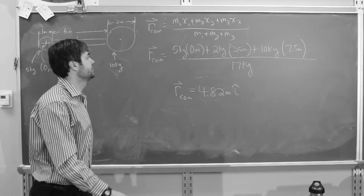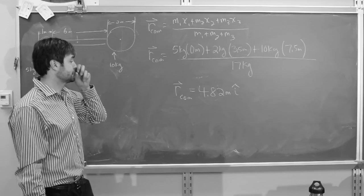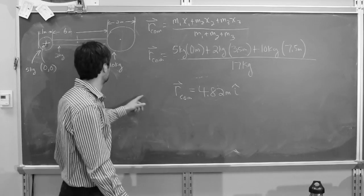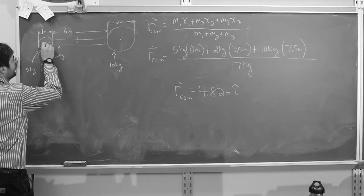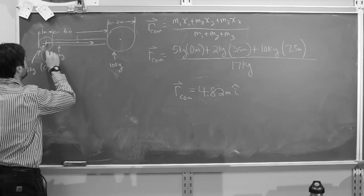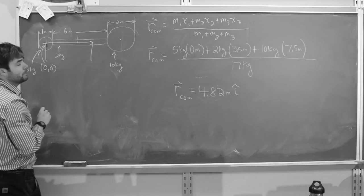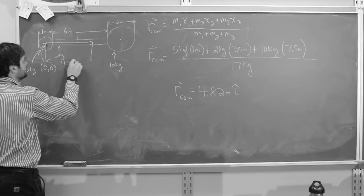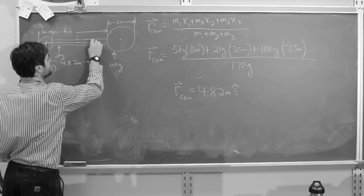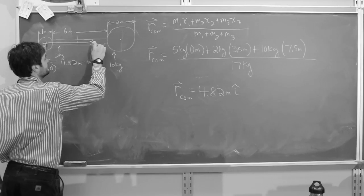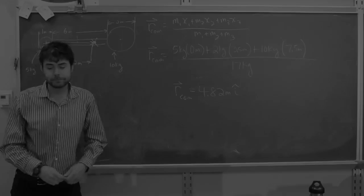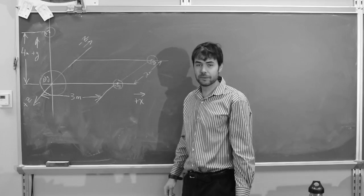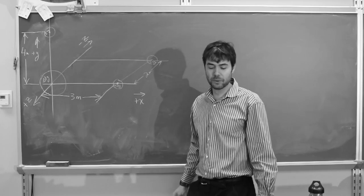That's 4.82 meters in the i-hat direction. So where is the center of mass? We go out 4.82 meters in the i-hat direction, and our center of mass is right there. This next problem is a little more difficult because it's in 3 dimensions, but it's still the same formula and the same physics.